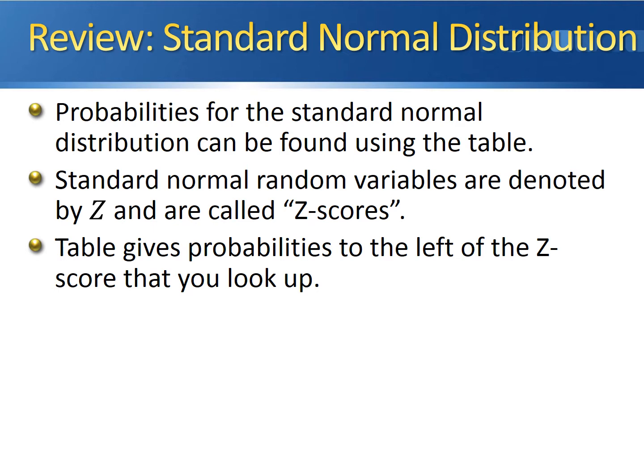The resulting number you get from the table at the intersection is the probability, or the area to the left of the Z-score that you looked up.